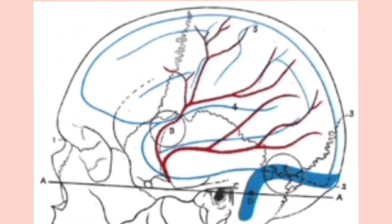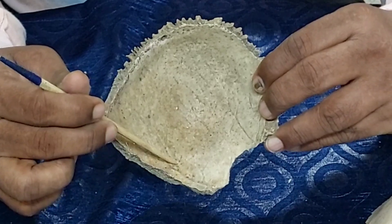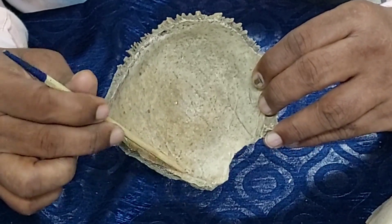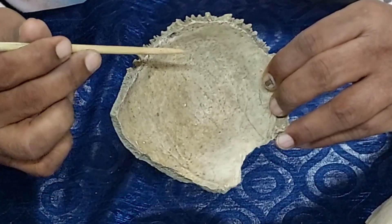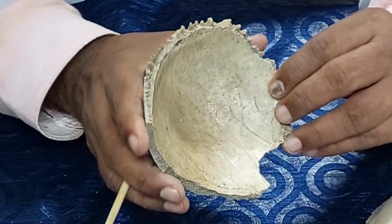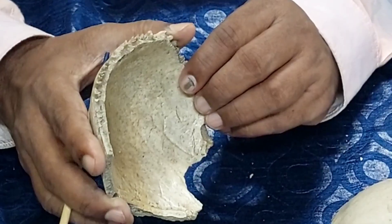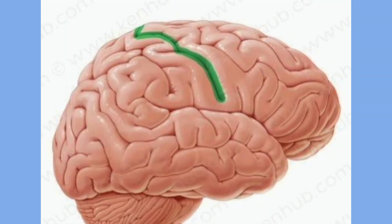Of these two structures, artery and vein, which forms the groove? The answer is it is the veins — the middle meningeal veins are close to the bone, so they form the groove, not the artery. This is a frequently asked question.